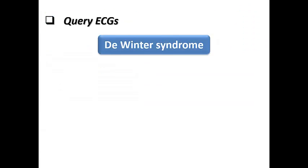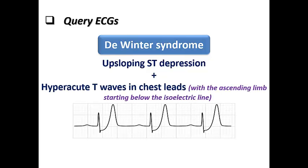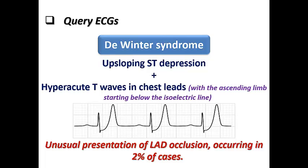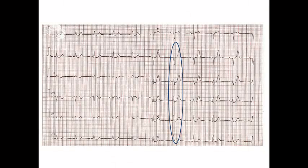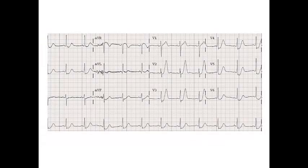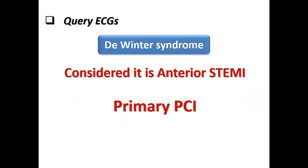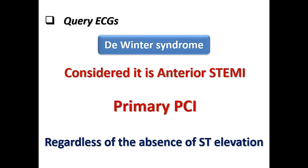Now let's move to the famous De Winter syndrome, characterized by up-sloping ST depression plus hyperacute T waves in chest leads, with the ascending limb of the ST segment starting below the isoelectric line — so the J point is depressed. This is an unusual presentation of LAD occlusion occurring in about 2% of cases. In these ECG examples, we see hyperacute T waves with up-sloping ST depression, diagnostic of De Winter syndrome, which is considered anterior STEMI and should be scheduled for primary PCI regardless of the absence of frank ST elevation.